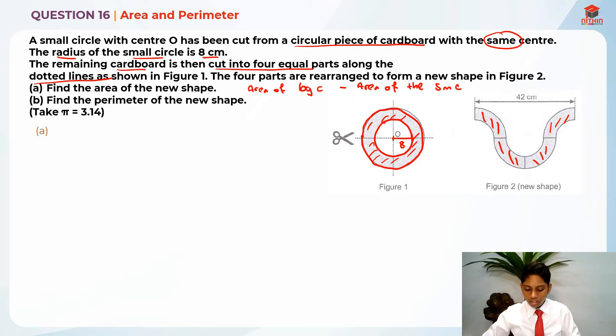But first, we need to find the radius of the big circle because remember the formula of area of a circle, which is actually pi r square. So it's basically 3.14 times radius square, but we don't know the radius of the big circle. So what I'm going to do is to actually use the second figure because they have given us this information about 42 cm. So let me just fill this up for you guys.